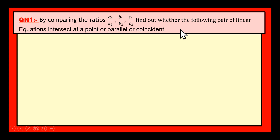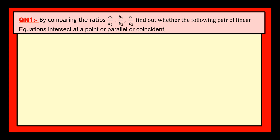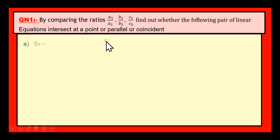See, if there are two lines, then there are three possibilities. Either both the lines may intersect, or that pair of lines may be parallel, or one line may coincide with another line. These are the three possibilities. We have to check whether the given pair of equations represents what type of lines.